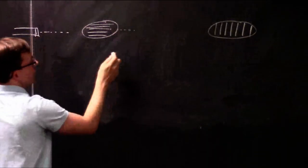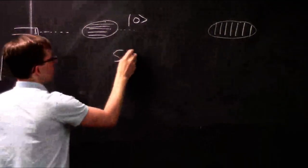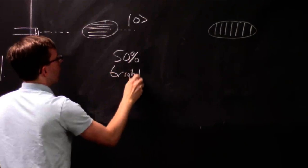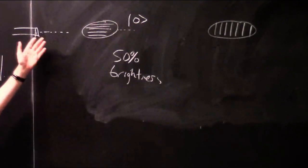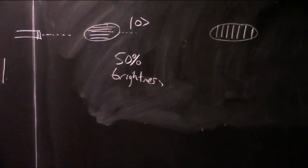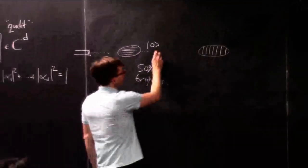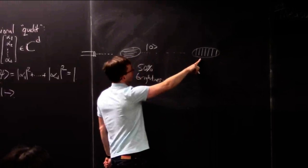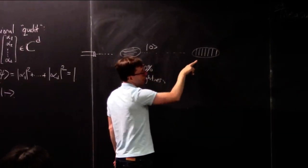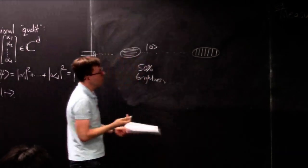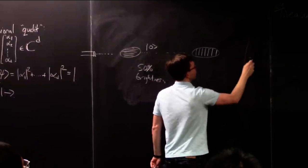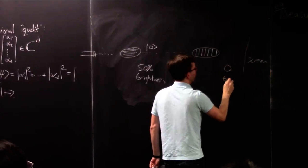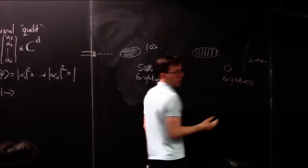At that point, any photons that come through are going to definitely be in state |0⟩, and you have 50% intensity. This second filter also measures in the 0-1 basis, and since it's definitely going to get zero — which for this filter means horizontal — it eats it up and generates heat. So at this experimental setting, nothing comes through to your screen at the end. You have zero brightness.